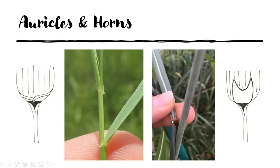Horns, as shown in this photo and diagram, are an extension of the leaf sheath that is stiff plant material forming a U-shape. There's only one grass I know of in Illinois that has horns, and that is Indian grass, which has these U-shaped horns. It also has a membranous ligule in between them, so in the case of this grass, the ligule is combined with another structure.